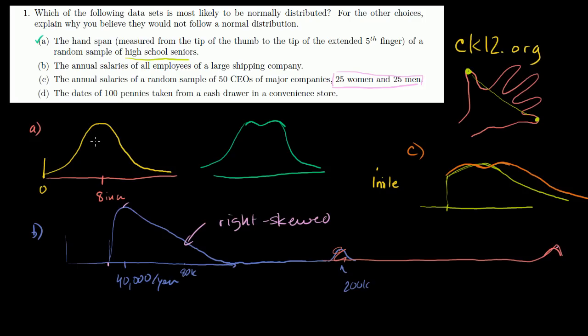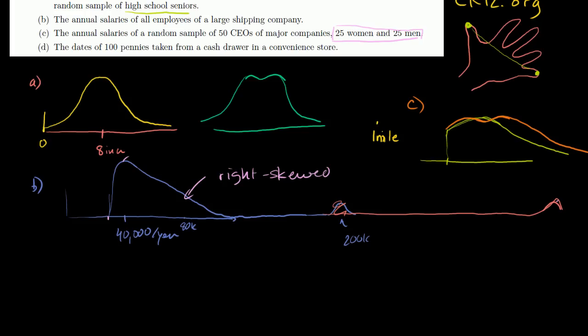And then, so far, choice A looks like the best candidate for a pure, or the closest to being a normal distribution. Let's see what D is. The dates of 100 pennies taken from a cash drawer in a convenience store. 100 pennies. So that's actually an interesting experiment. But I would guess, once again, this is really a question where I get to express my feelings about these things. You know, as long as your answer is reasonable, I would say that it is right. Most pennies are newer pennies because they go out of commission, they get traded out, they get worn out as they age, they get lost, or they get pressed at the little tourist place into those little souvenir things. I'm not even sure if that's legal, if you can do that to money legally.